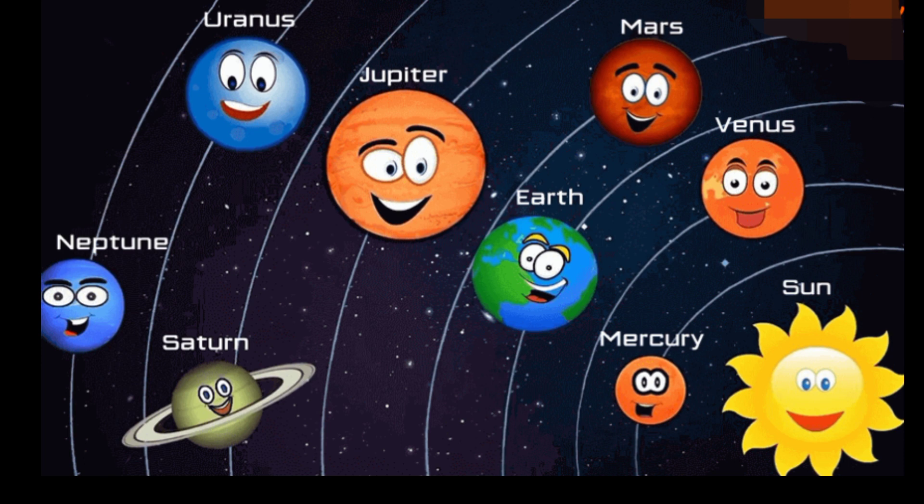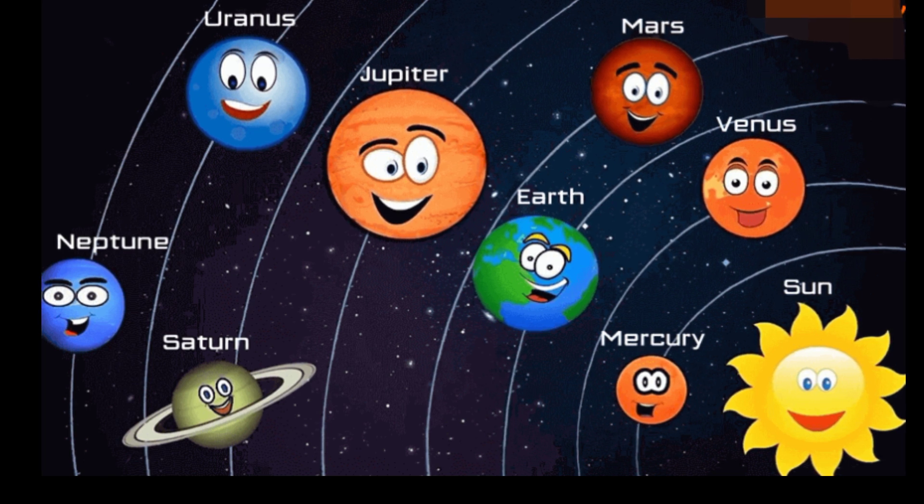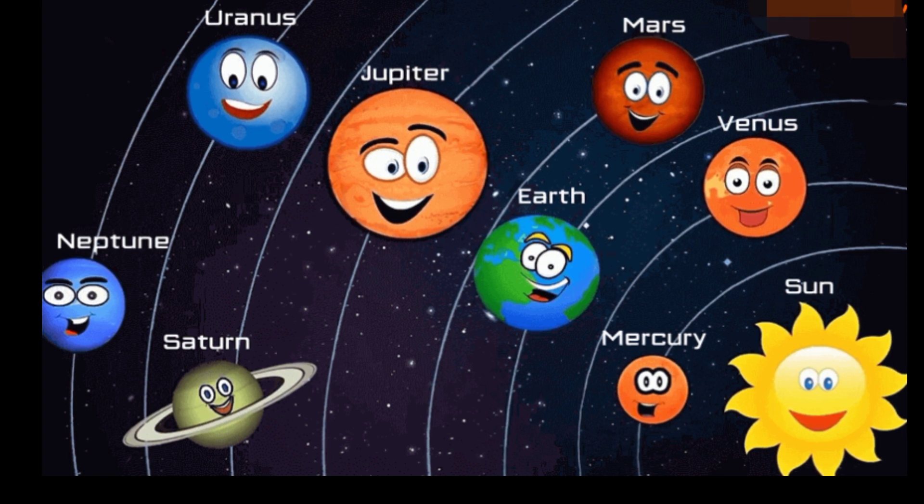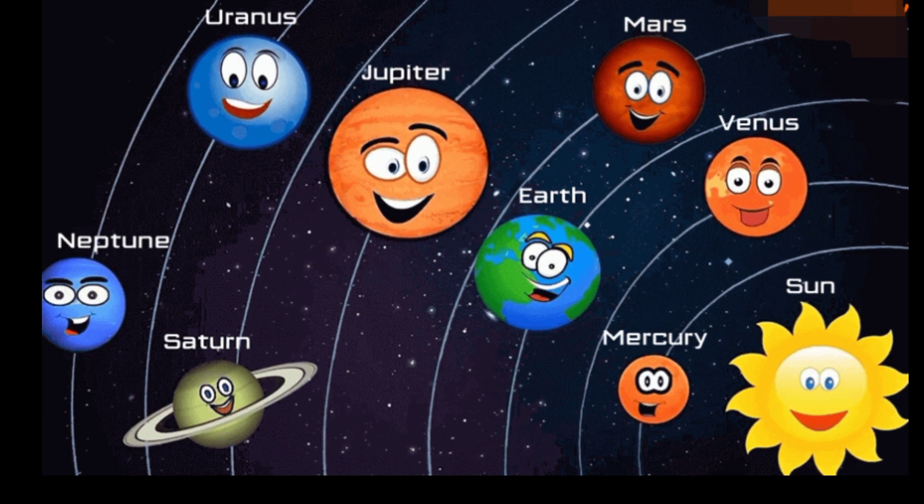Adorned with a dazzling, complex system of icy rings, Saturn is unique in our solar system. The other giant planets have rings, but none are as spectacular as Saturn's.